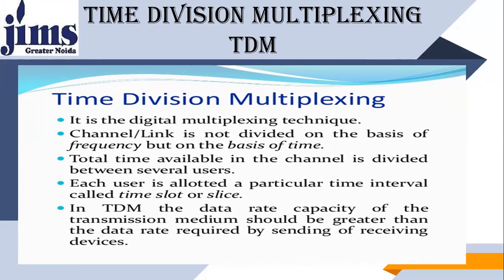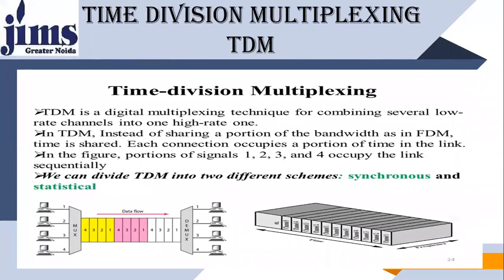In TDM, the data rate capacity of the transmission medium should be greater than the data rate required by each source. TDM is a digital multiplexing technique for combining several channels into a high data rate stream. Instead of sharing a portion of the bandwidth as in FDM, in TDM you utilize the same bandwidth for different channels. Each connection occupies a portion of time in the link. We can divide TDM into two different schemes: synchronous and statistical.